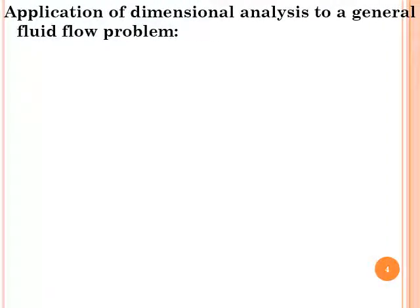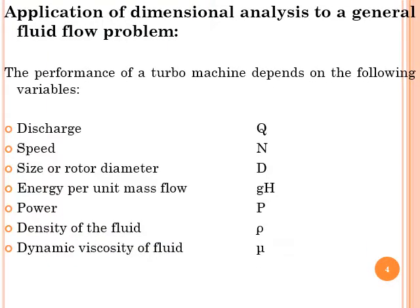Applying dimensional analysis to general fluid flow problems: the performance of a turbomachine depends on the following variables — discharge Q, speed of the rotor N, diameter of the rotor D, energy per unit mass GH, power P, density of the fluid ρ, and dynamic viscosity μ. These are the parameters that influence turbomachine performance.